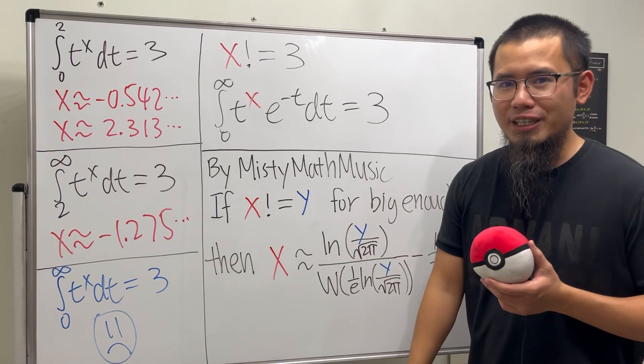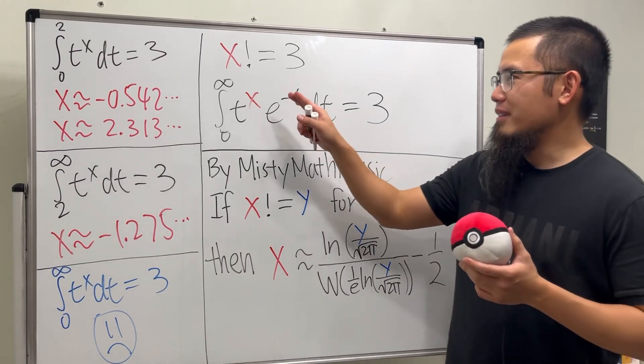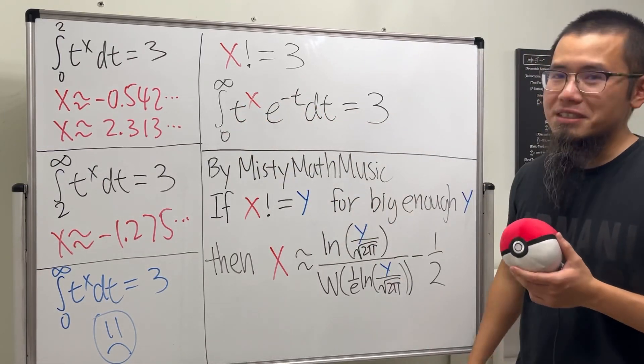But I have no idea how to do that. So if you guys have any idea how we can find out the negative solution to this kind of equations, let me know.